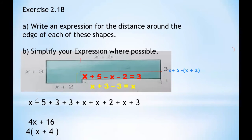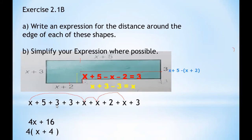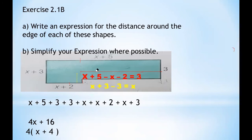Now we can find the perimeter. Adding all sides: (x+5) + 3 + 3 + x + (x+2) + (x+3). Counting the x terms: 1, 2, 3, 4 — so 4x. Adding constants: 5+3+3+2+3 = 16. So the perimeter is 4x+16. Since 4 and 16 are both multiples of 4, we factor: 4(x+4). That is the perimeter of this L-shape figure.